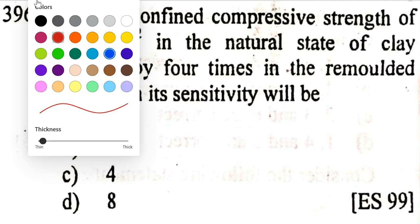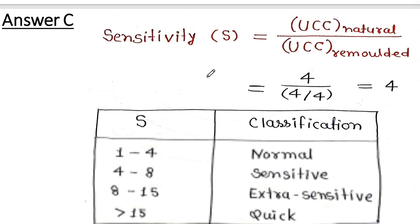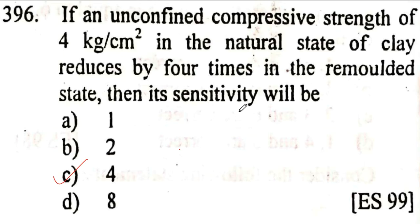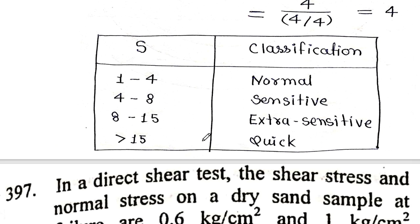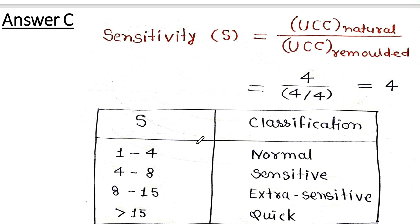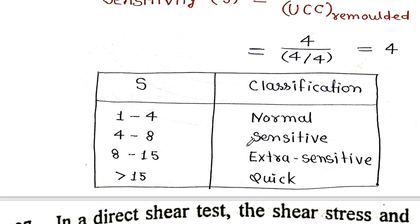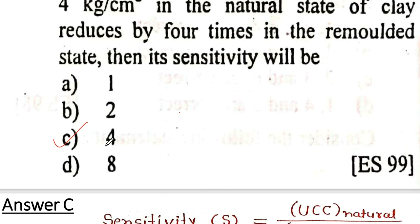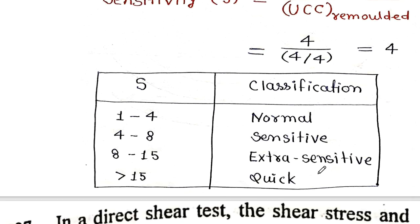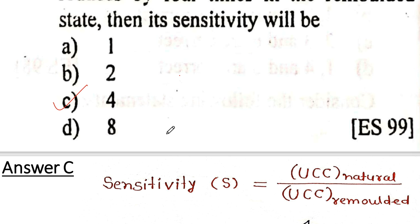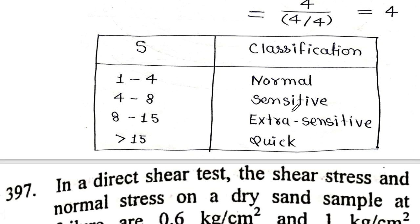Now looking at the sensitivity classification table: sensitivity value of 4 falls in the sensitive range (between 4 and 8). Values above 8 are extra sensitive, above 15 are quick. Since our value is 4, the soil is classified as sensitive.